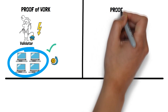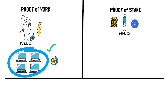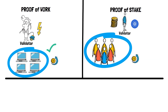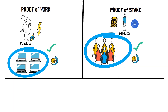In proof of stake, a validator uses his assets such as ADA, which he delegates to a staking pool, and validates transactions. The more assets there are in the pool, users will validate more transactions and more rewards will be minted. The most significant difference is that miners don't need to use physical resources to verify blocks in the proof of stake method.